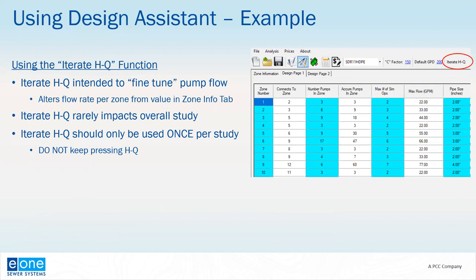E1 Design Assistant includes an Iterate function which can help optimize the system, but I wanted to make special mention because the function can be misused. The Iterate function can be used after the initial design calculations have been completed. It modifies the flow rate on the zone information page to better reflect the flow rate associated with the TDH for pumps in that particular zone. Because TDH is a function of flow rate, this calculation is recursive, and the function must iterate a few times to find an optimal value. The result may be a more accurate TDH; however, the Iterate function rarely impacts the overall study. The Iterate function should only be used once per study — do not keep pressing it. It's not necessary to iterate most designs, and E1 does caution its use in most situations.